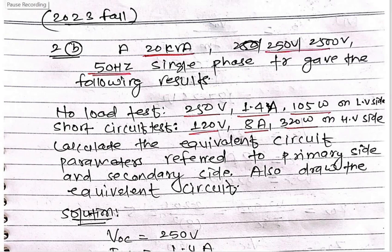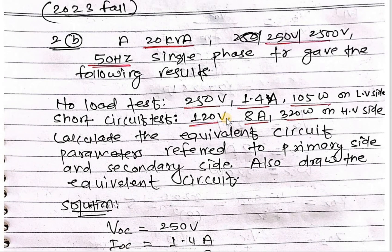Hello everyone and welcome to numerical series of electrical machine. This question is asked in 2023 fall of Pokhara University. The numerical problem is: a 20 kVA, 250 and 2500 volt, 50 Hertz single-phase transformer gives the following result.